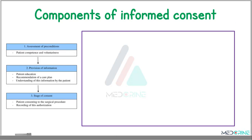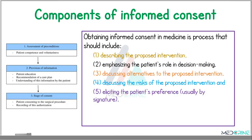In an informed consent, we have some components that we need to look at. The first one is to describe the proposed intervention that will be undertaken, then we emphasize on the patient's role in decision-making. We also discuss the alternatives to the proposed intervention, the risks of the proposed interventions, and eliciting a patient's preference, usually by the patient's request.